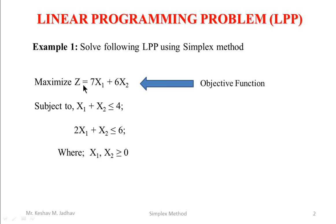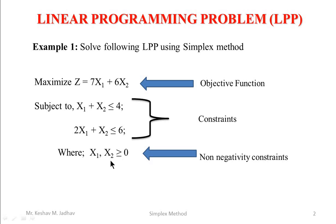Here the z equation is called the objective function and our objective is to maximize the value of z. These are the constraints and this is the non-negativity constraint. In previous videos we have seen how to formulate such a linear programming problem. Here x1 is number of products of type A, x2 is number of products of type B, then z is the profit equation. The first constraint represents a constraint on the time limit of machine 1 and the second constraint represents a constraint on the time limit of machine 2.